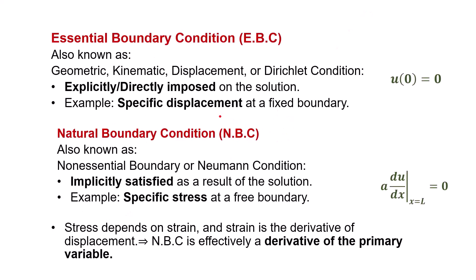Before we talk about how to find the weak form, we need to understand the types of boundary conditions. There are two main types, essential boundary conditions, or EBCs, and natural boundary conditions, or NBCs. Essential boundary conditions are also called geometric, kinematic, or displacement boundary conditions. In more technical terms, they are known as Dirichlet conditions. These conditions are directly applied to the solution.